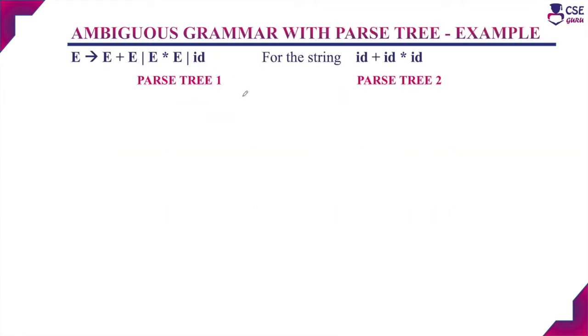Example for ambiguous grammar. The given grammar is E → E + E | E * E | id, and we need to derive the string id + id * id.